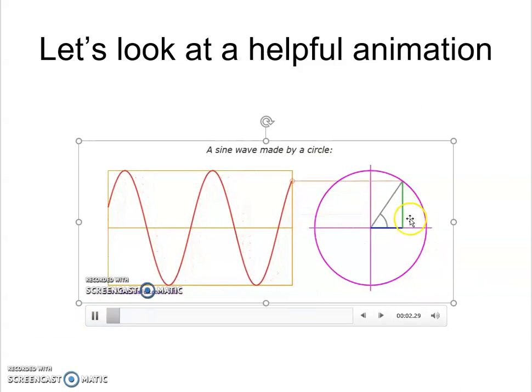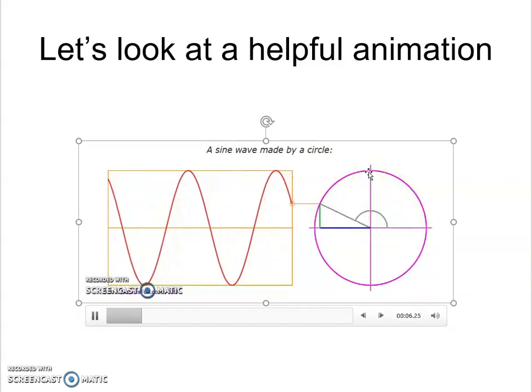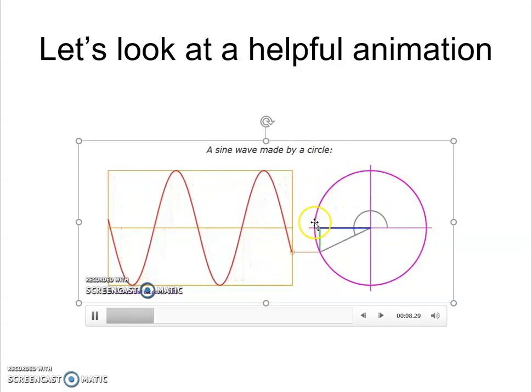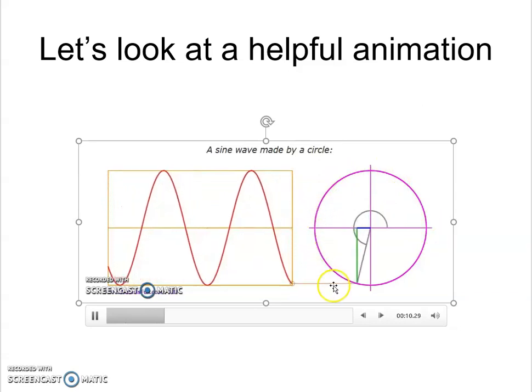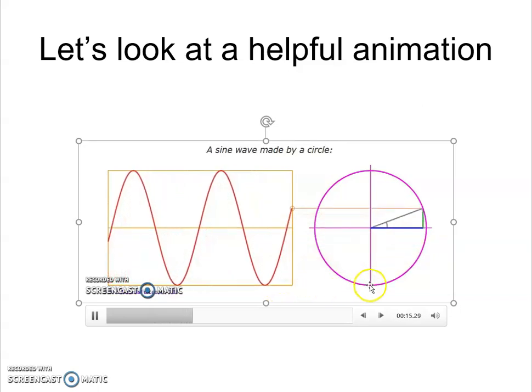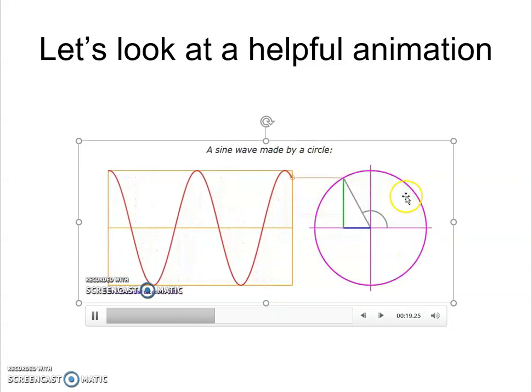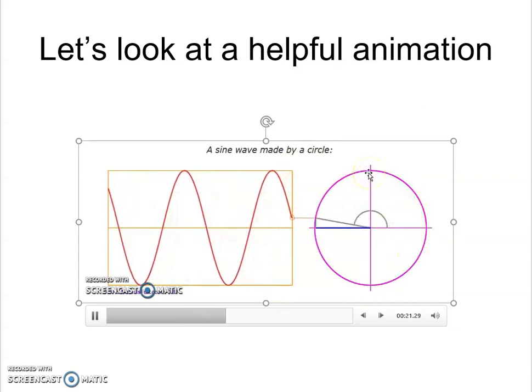So we start at 0 degrees in the sine which is this green side. It gets its biggest up here and it starts to decrease. Now its length is large but in a negative capacity so that's why we're down underneath the x axis until